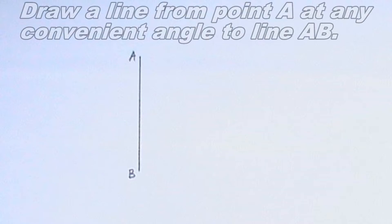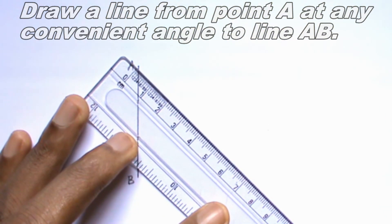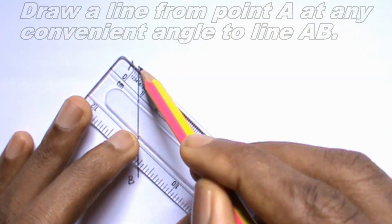The next step I will take is to draw a line from point A at any convenient angle to line AB. I will draw a thin continuous line of length 50mm. I will label the end of the line D.